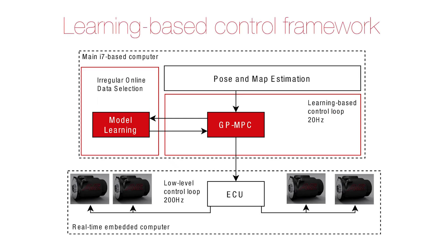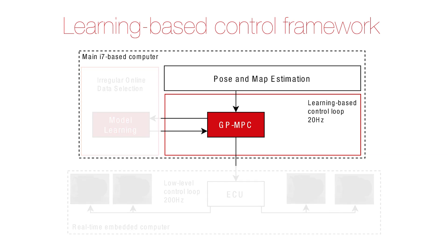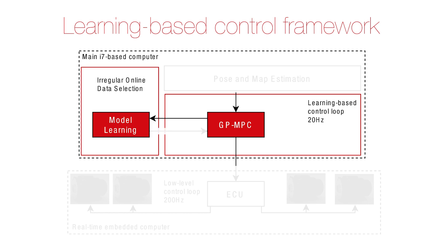The learning control framework consists of two modules, both running on the vehicle's main computer. The MPC module receives the state estimates derived from the sensory measurements and uses this information together with the track layout and the vehicle model to compute the control inputs. Additionally, the model errors are computed from the state estimates and sent to the model learning module, which successively computes improved models for the MPC.